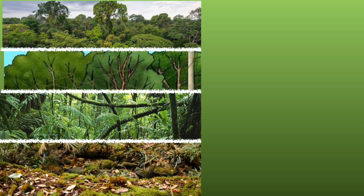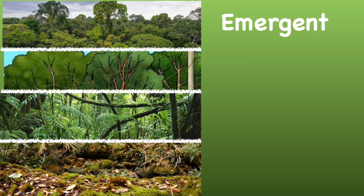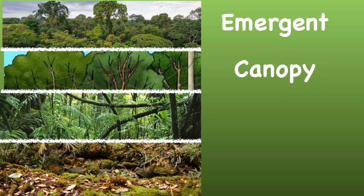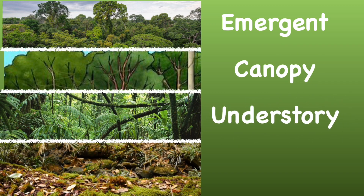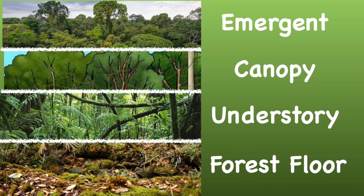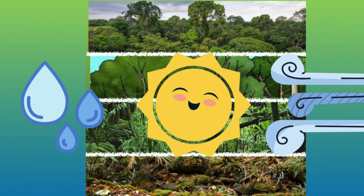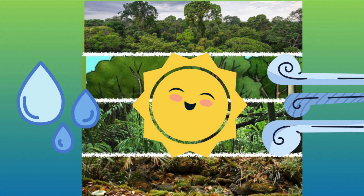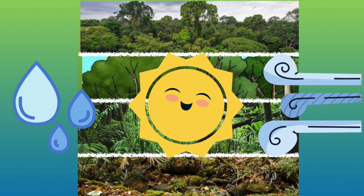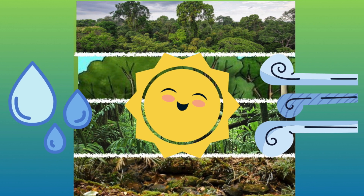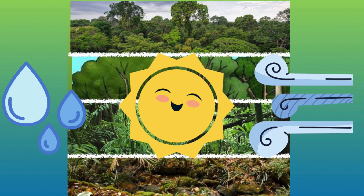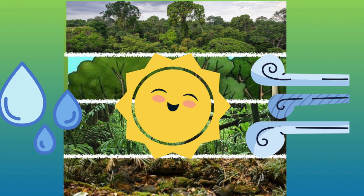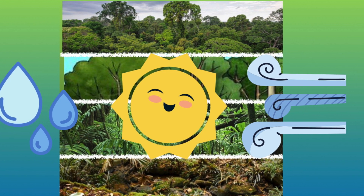The rainforest has four layers: emergent, canopy, understory, and forest floor. Each layer has unique characteristics based on differing levels of water, sunlight, and air circulation. Let's see each layer one by one.